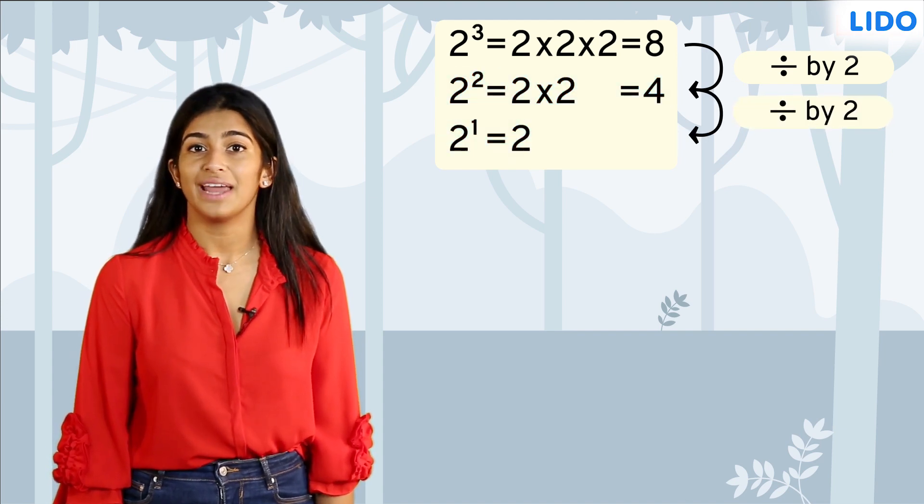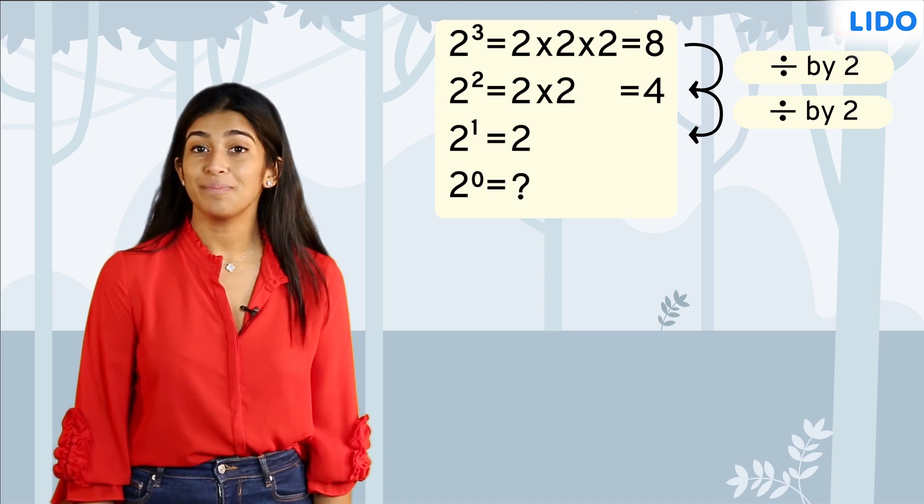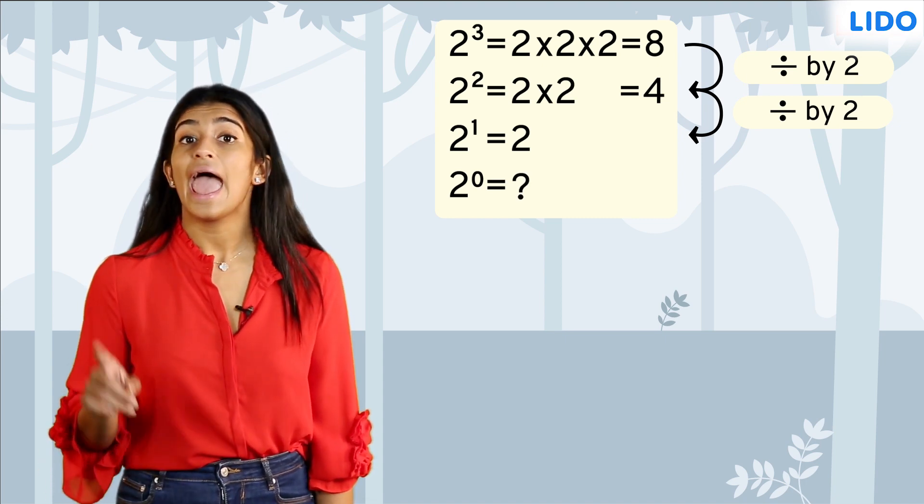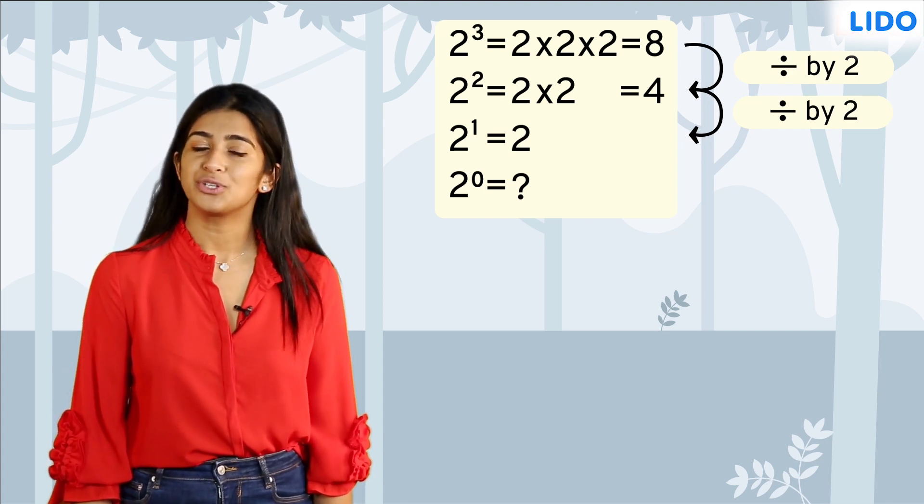Let's use this pattern to find out what 2 raised to 0 is. According to the pattern we just defined, every time we decrease the exponent of 2 by 1, we need to divide it by 2.